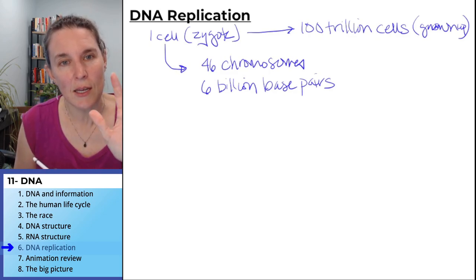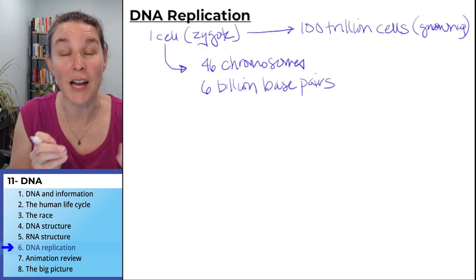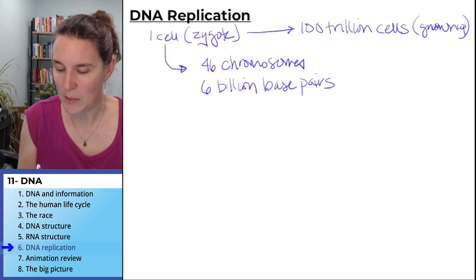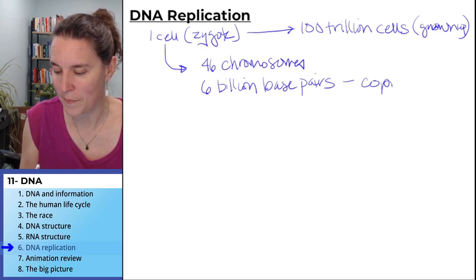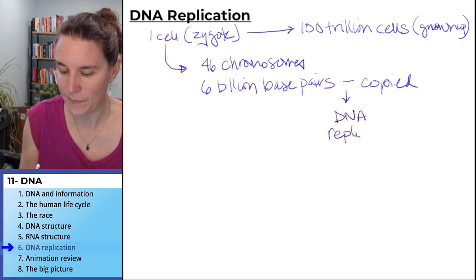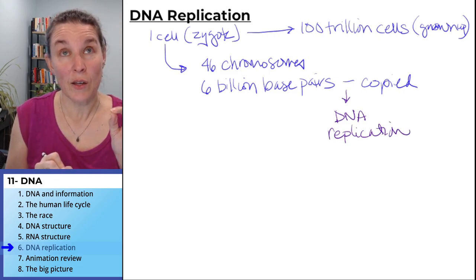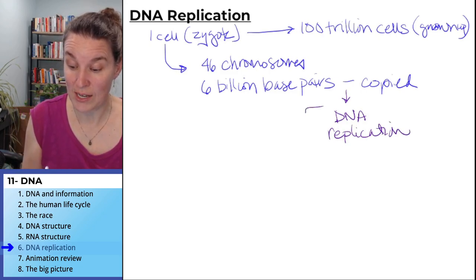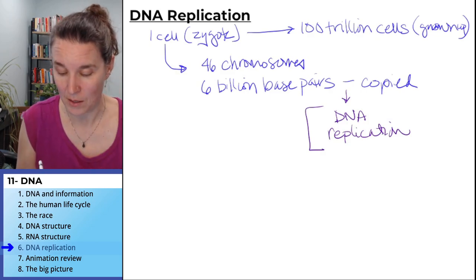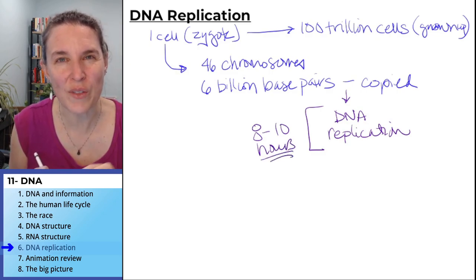Six billion base pairs every time a cell divides. Six billion base pairs have to be copied. And that process is DNA replication. And in humans, for us, this whole process, one cell, it takes 8 to 10 hours to copy all the DNA.